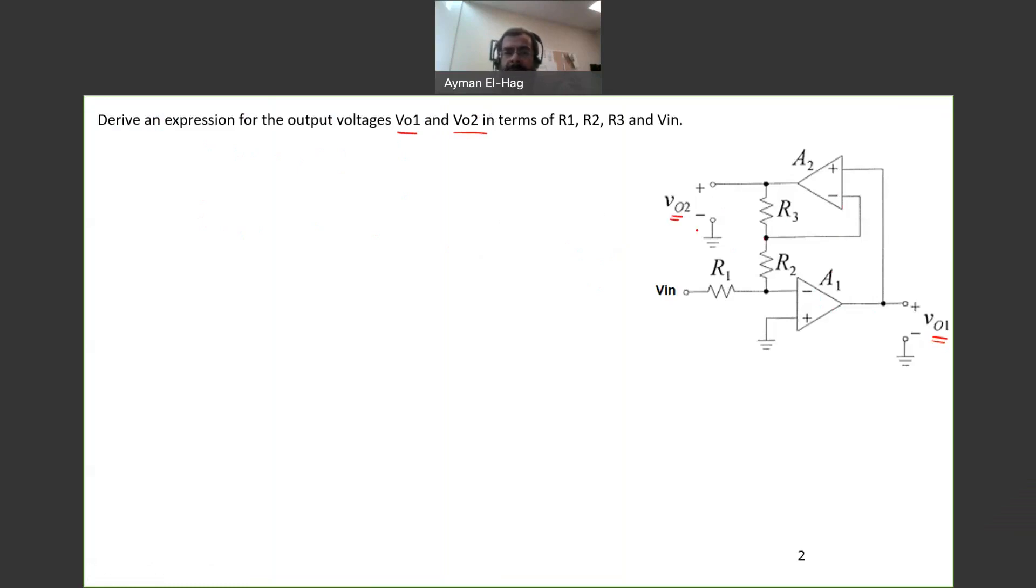Op-amp 1 and op-amp 2. And this voltage needs to be in terms of R1, R2, R3, and Vin. So we need to find a formula for VO1 and for VO2 in terms of these four variables.